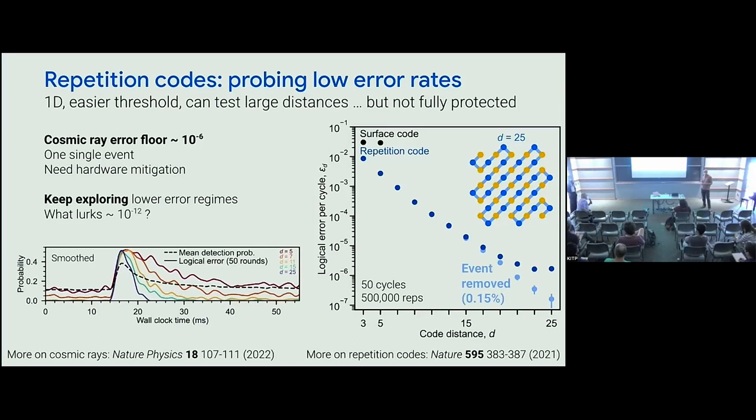Question: if the high energy events are not cosmic rays, what might they be? I'm not the right one to ask, but the paper has some hypotheses. Matt McEwen, the first author, was saying it's probably not cosmic rays per se, but some other thing.